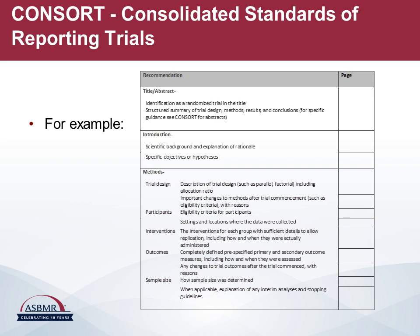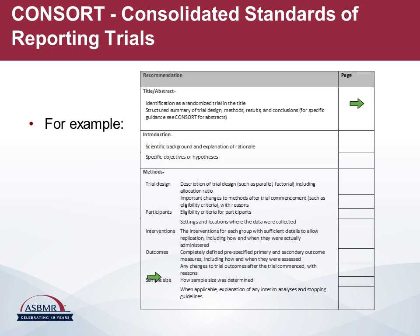Here is an example of a page from CONSORT. Again, you have the same format with the recommendation in the left-hand column and the page number to be completed in the right-hand column. This shows the first part of it, giving tips about what should be in the title and abstract, what should be in the introduction, and then useful advice about the design of the trial — what you should include about the participants, interventions, outcomes, and sample size.